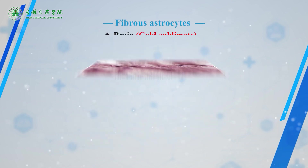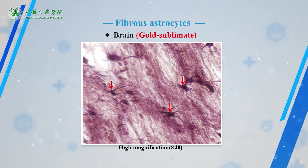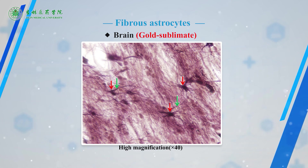The second slide is fibrous astrocytes, observed with gold sublimate staining. They have long, slender, smooth processes. Some of the processes have expanded end-feet at their ends, attached to the wall of the blood capillaries to form end-feet. The blood vessels are shown as regular black threads in the slide, as indicated by the blue arrow.